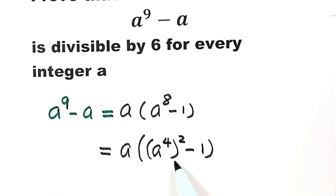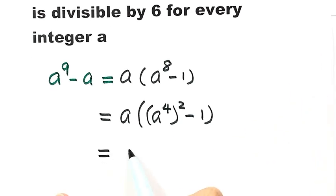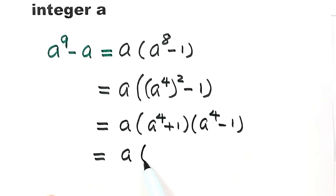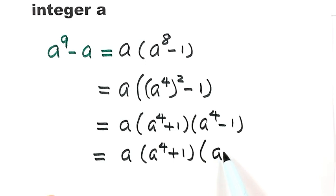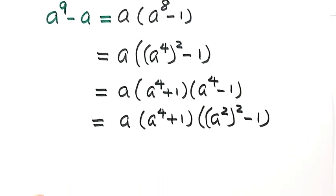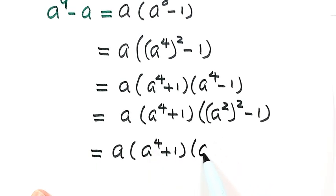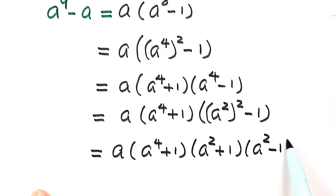We can factor this part as a to the fourth power plus 1, times a to the fourth power minus 1. Next, let's rewrite that last term as a squared, squared, minus 1, and continue to factor it as a squared plus 1, times a squared minus 1.